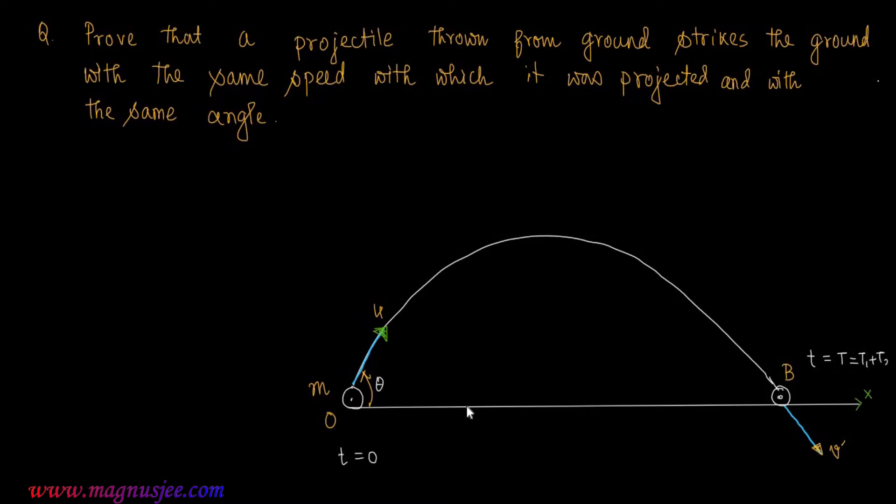Capital T equals T1 plus T2, where T1 is the time of ascent and T2 is the time of descent.